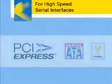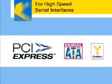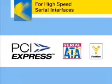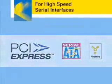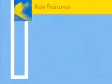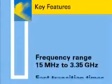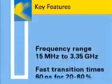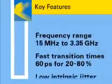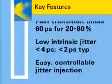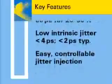The Agilent 81134A is the perfect solution for testing devices for today's high-speed serial interfaces, including PCI Express, serial ATA, InfiniBand, and FireWire. Key features include its broad frequency range from 15 MHz up to 3.35 GHz, the very fast rise times of less than 60 picoseconds, and its very low intrinsic total jitter of typically less than 2 picoseconds.